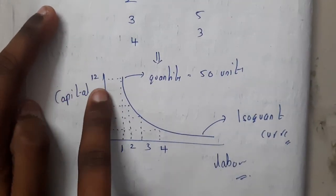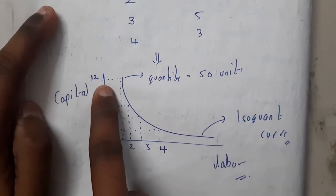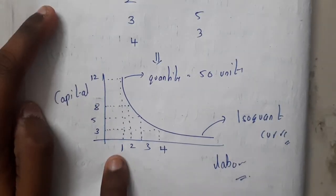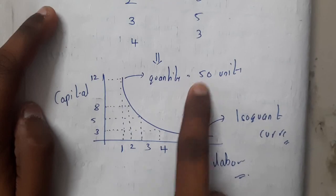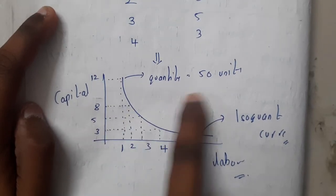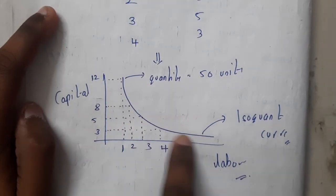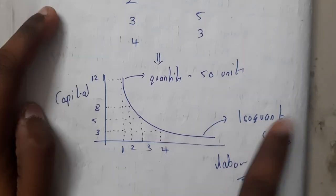Here I told this is an isoquant curve because with 12,000 capital with one worker or one labor we are getting the quantity as 50. Similarly for 8 and 2 also we are getting the quantity as 50 only. The units of production is same, so that is the reason why we will be calling them as isoquant curves. Production is same.